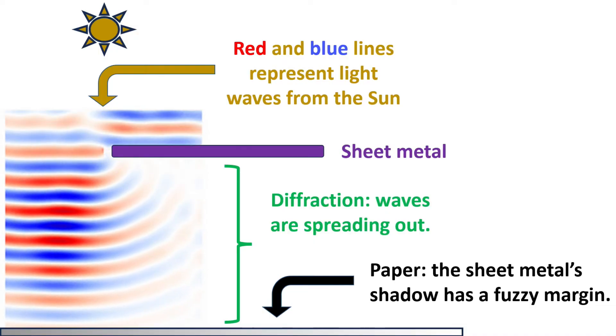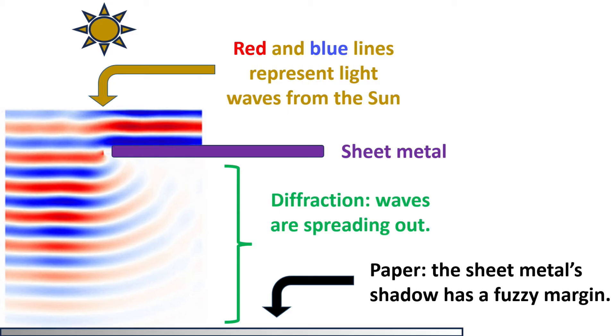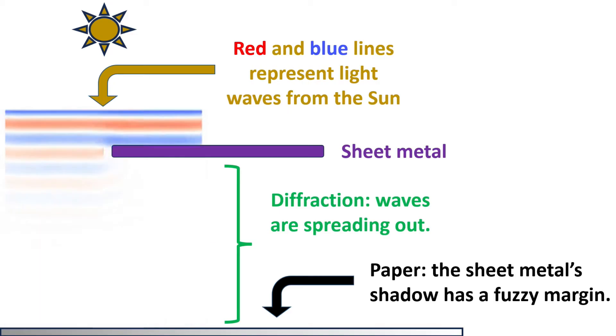Here's an animation of this diffraction. As the distance between the sheet metal and the paper is increased, the light waves can spread out more. As the light waves spread out, they make the shadow's margin fuzzy and lighten up the shadow.